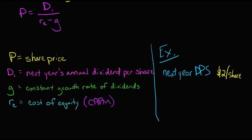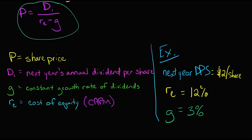What's the cost of equity? Let's assume that's 12%. And then what do we have for the growth rate? We have to make an assumption here. Let's just assume that the growth rate of these dividends in perpetuity is going to be 3%.